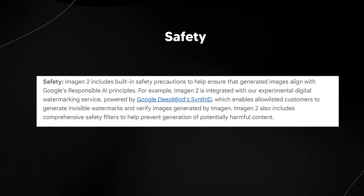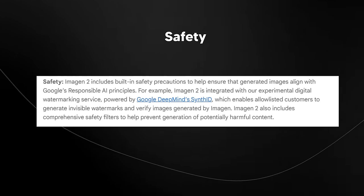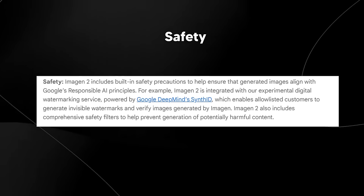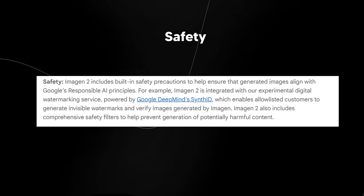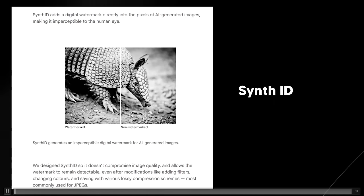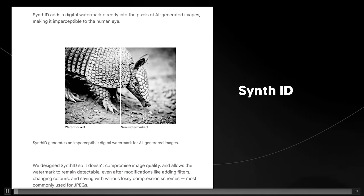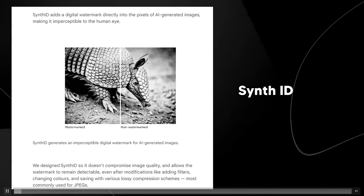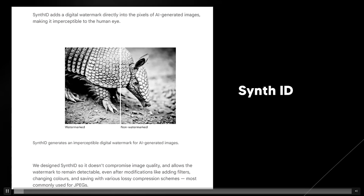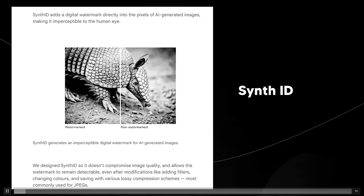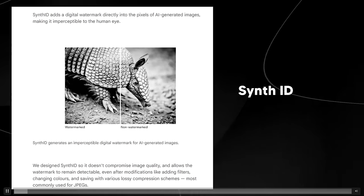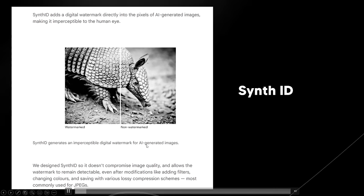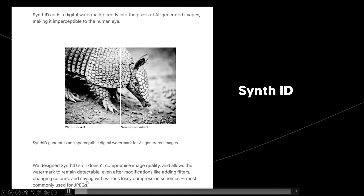Imagen2 includes built-in safety precautions to ensure generated images align with Google's responsible AI principles. It's watermarked with Google's SynthID, which generates invisible watermarks to verify images generated by this software. SynthID embeds a digital watermark directly into the pixels of AI-generated images, imperceptible to the human eye. Even if you edit the image — adding filters, changing exposure — the watermark ID remains completely intact.